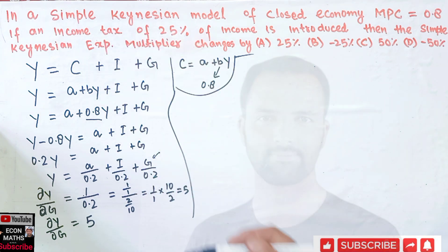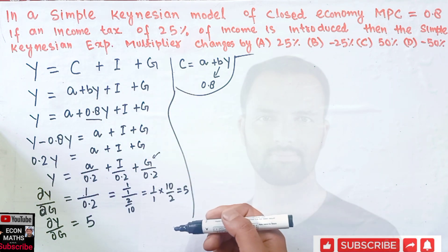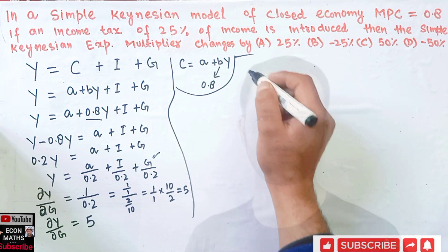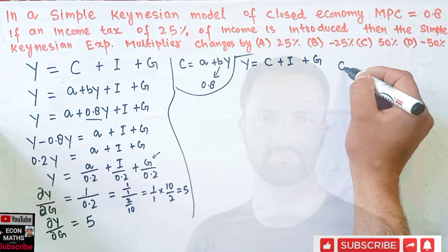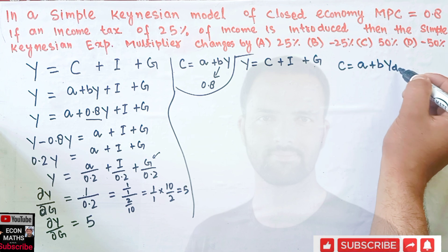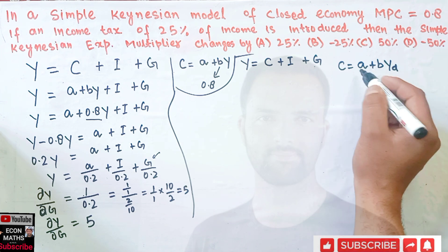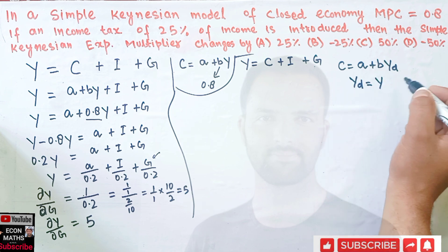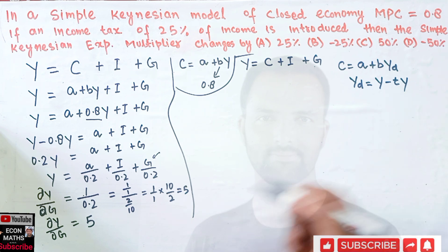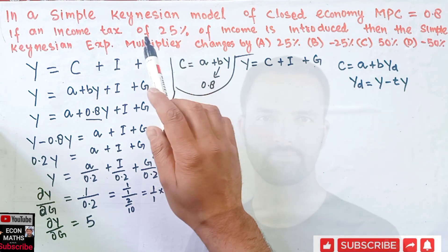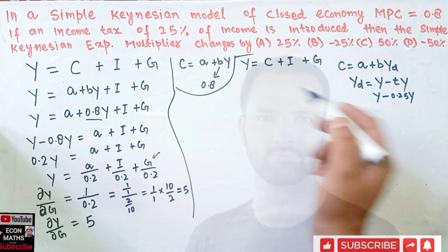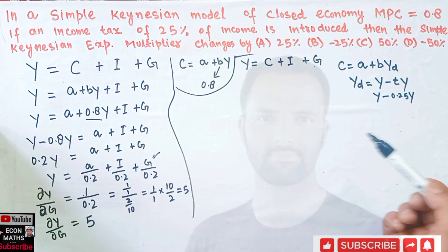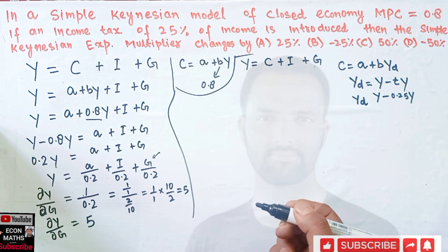When there is income tax of 25%, what will be our GDP equation? In this case, Y equals C plus I plus G, and C equals A plus B·Y_d, where Y_d is disposable income. Disposable income equals total income minus the tax imposed on income, that is Y minus t·Y. With a tax rate of 25%, we can write it as Y minus 0.25·Y, so disposable income equals 0.75·Y.